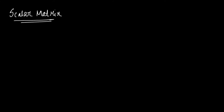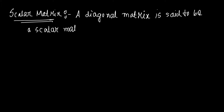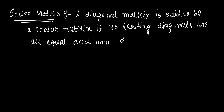So what is this scalar matrix? It is a type of diagonal matrix. A diagonal matrix is said to be a scalar matrix if its leading diagonal elements are all equal and the non-diagonal elements are all zero.